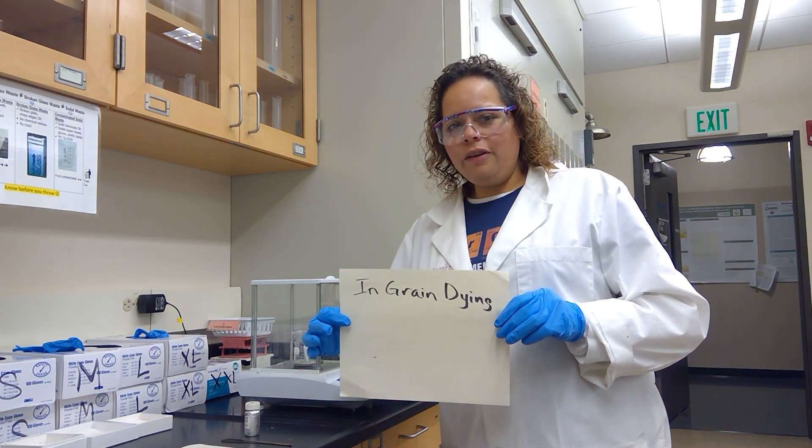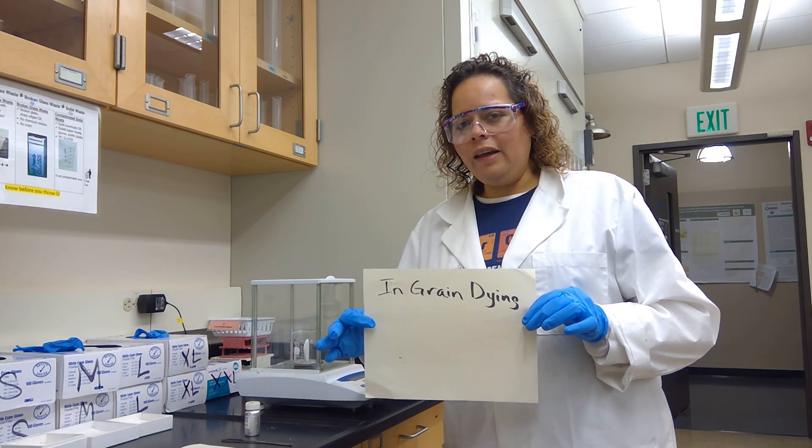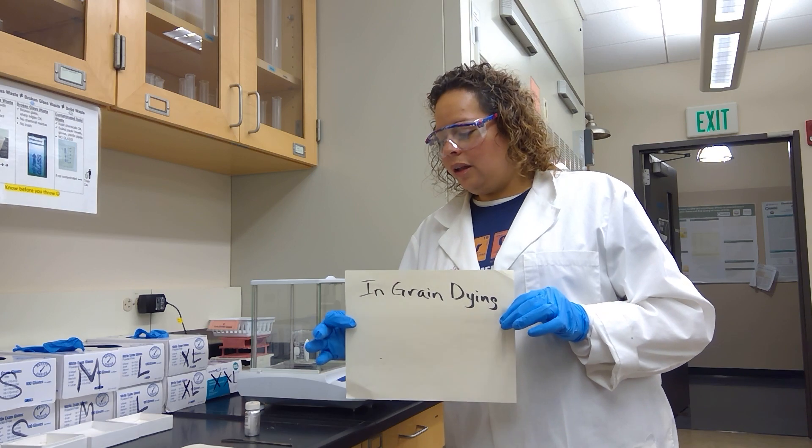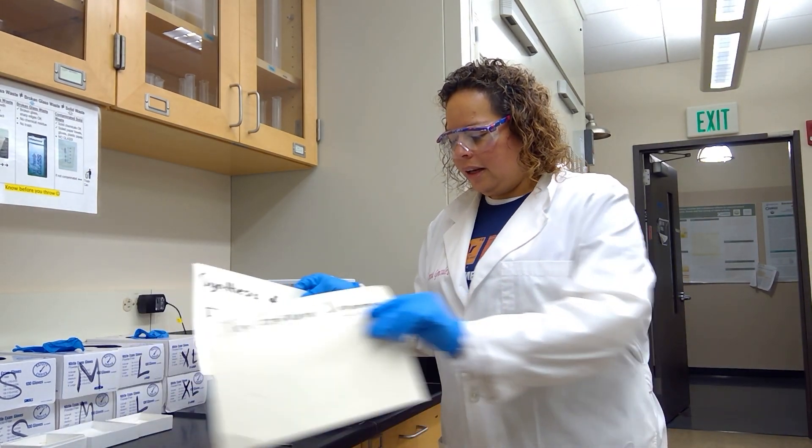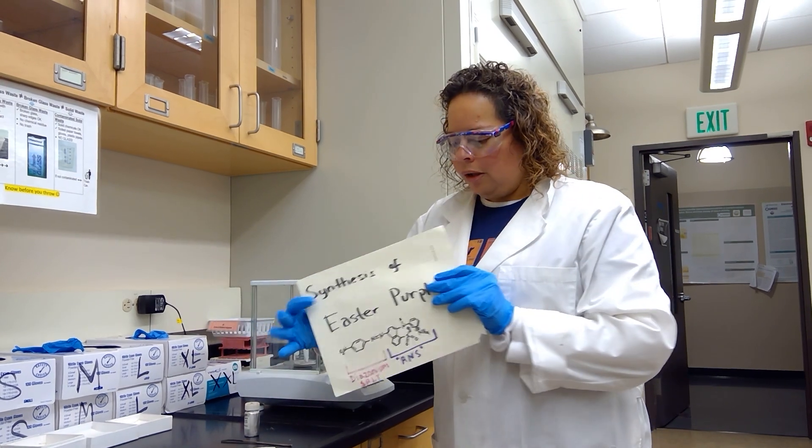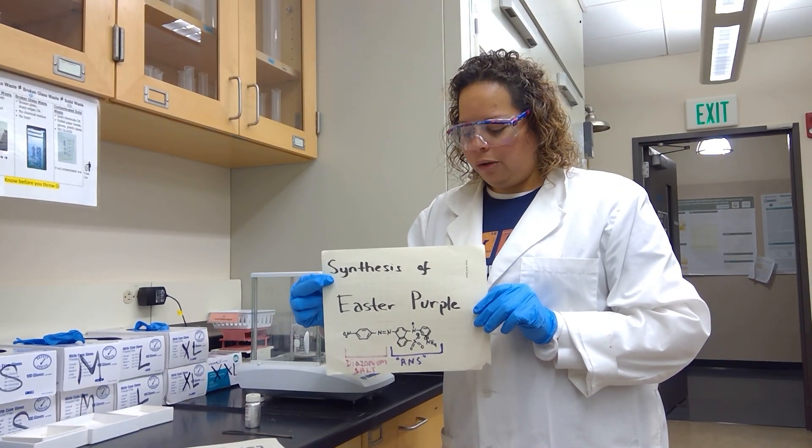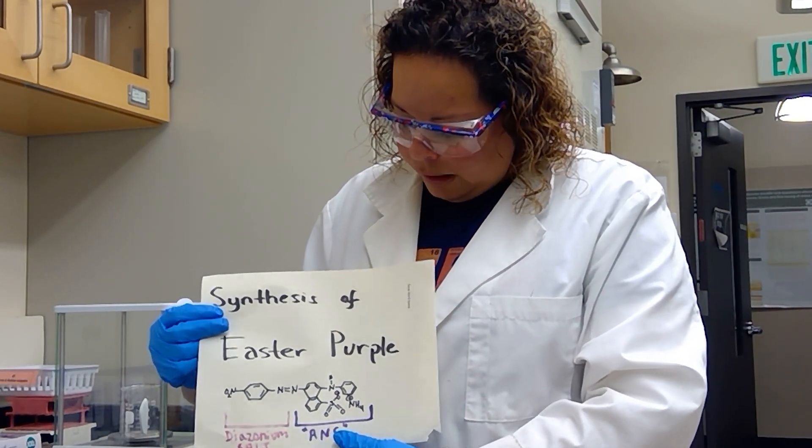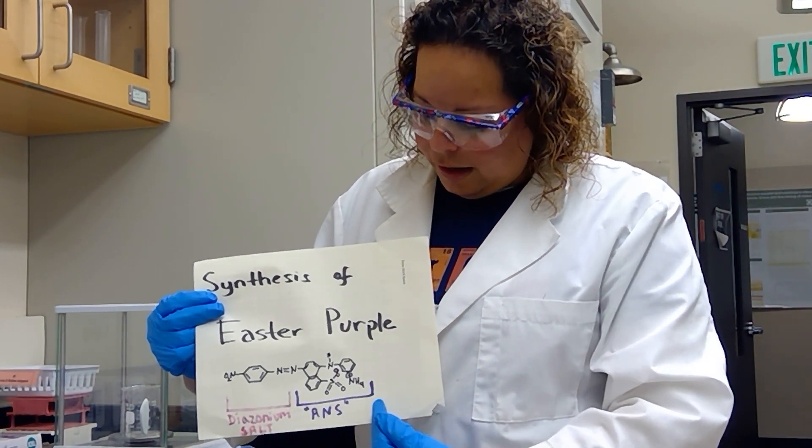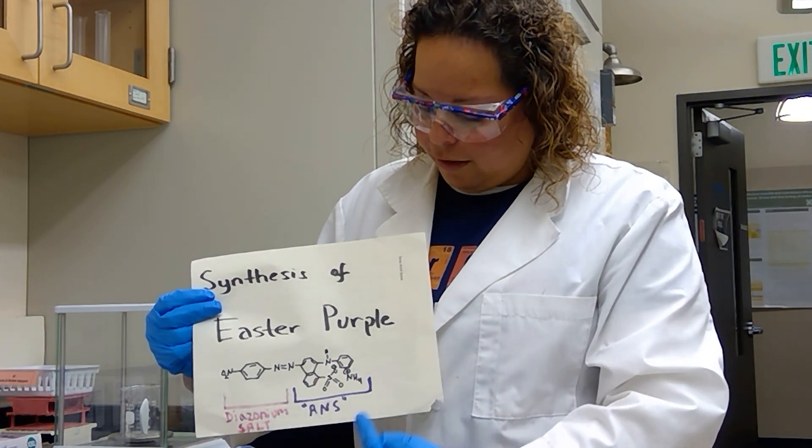Okay, so students, we are starting the process of ingrain dyeing, and the first thing that we're going to do is use our compound ANS to create Easter Purple. The diazonium salt that we created prior is one of the portions of the Easter Purple molecule. The other one has the abbreviation ANS, and altogether it should look like this structure.